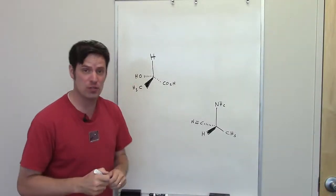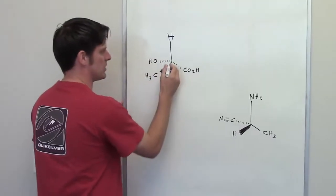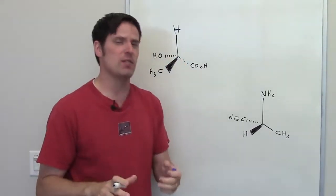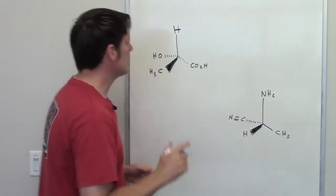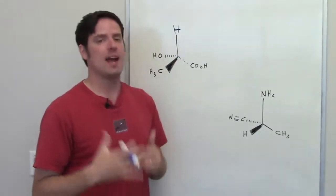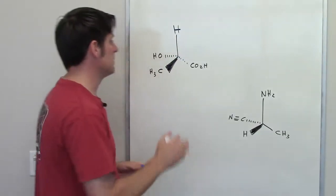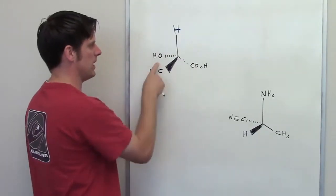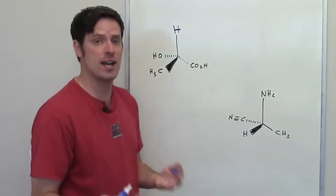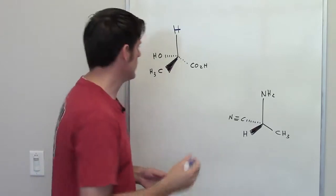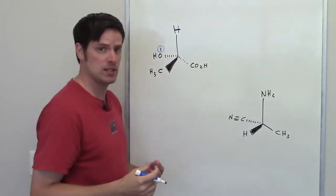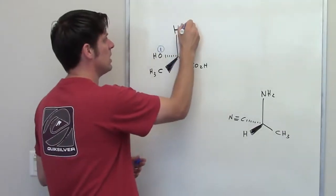Let's take a look at this first problem. We've got our stereocenter right here. We want to determine if it is R or S. We'll go out to each individual atom that's bonded to this central tetrahedral carbon and rank it according to atomic number. I go out to a hydrogen, an oxygen, a carbon, and a carbon. Oxygen has the highest atomic number of those four, so it's going to be the highest priority. Hydrogen has the lowest, so it's going to be the lowest priority.